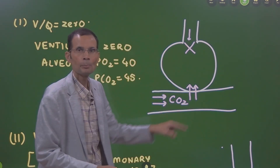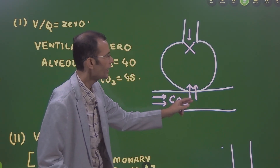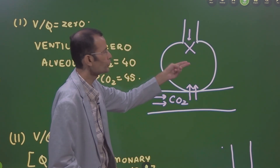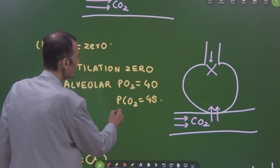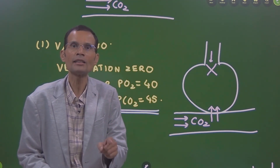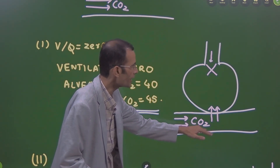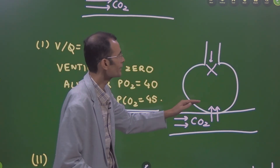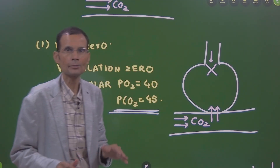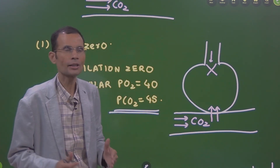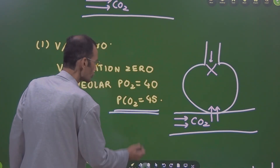But blood flow is still present. Blood perfusion is there, meaning carbon dioxide is reaching the alveolus — it comes from the blood and diffuses into the alveolus. As a result, PCO2 in the alveolar air will rise. It was 40 normally; now it rises because carbon dioxide is diffusing from blood into the alveolus. Since no new air is coming in, carbon dioxide will not get diluted, and therefore PCO2 rises to 45. PO2 is falling and is almost 40 mmHg.